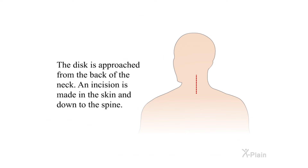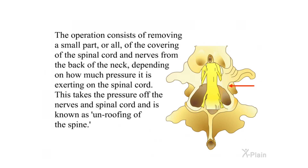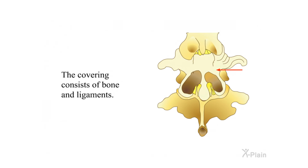Surgical treatment. The disc is approached from the back of the neck; an incision is made in the skin and down to the spine. The operation consists of removing a small part or all of the covering of the spinal cord and nerves from the back of the neck, depending on how much pressure it is exerting on the spinal cord. This takes the pressure off the nerves and spinal cord and is known as unroofing of the spine. The covering consists of bone and ligaments.